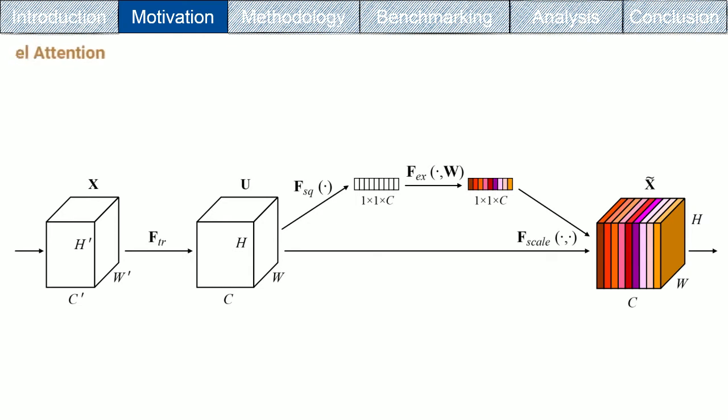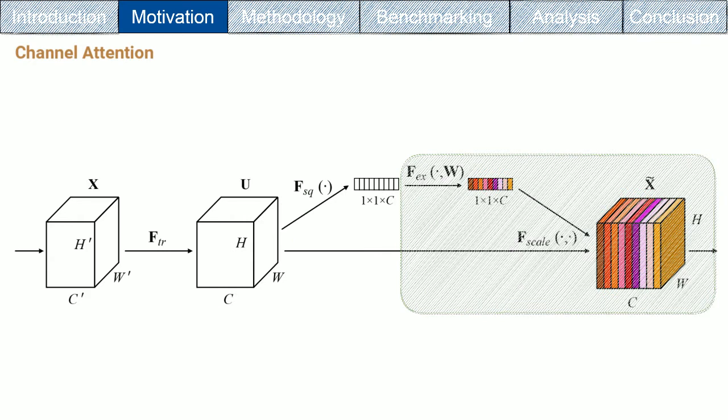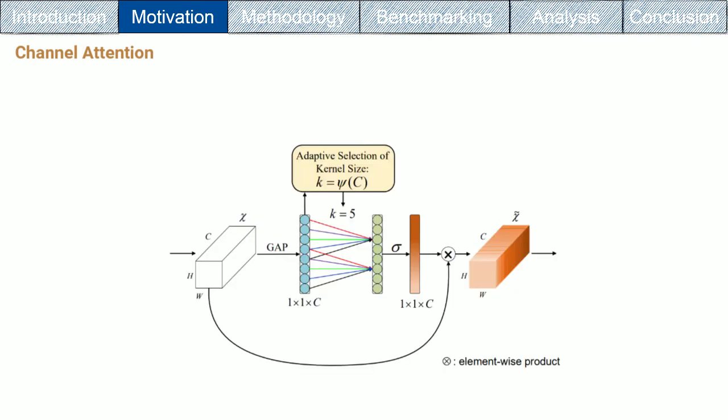SE-Net proposed squeeze and excitation block, where it first squeezed the spatial dimension then excites the channel features using two stacked fully connected layers. Another example is ECA-Net, which empirically shows that avoiding dimensionality reduction in SE-Net by using a simple 1D convolution layer is essential for learning the channel-attention interactions.